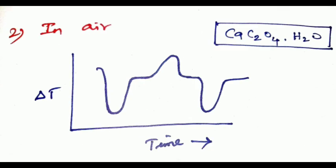In the presence of air, we get two endothermic and one exothermic peak. In the second step, carbon monoxide is formed, which further combines with oxygen to give carbon dioxide, and this is an exothermic process.